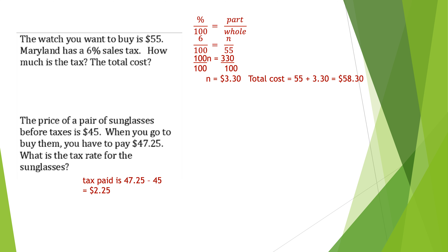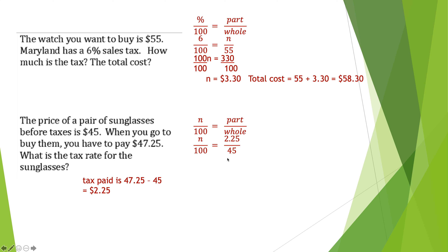For the sunglasses problem, you first need to figure out how much tax was actually paid. Before tax it's 45 dollars, after tax it's 47.25. Subtract: 47.25 minus 45 equals 2.25 in tax. Now set up the equation: n goes in the percent place because it asks 'what percent.' The tax of 2.25 is the part, and the whole cost was 45. Cross multiplying gives 45n equals 225. Dividing by 45 gives n equals five percent.